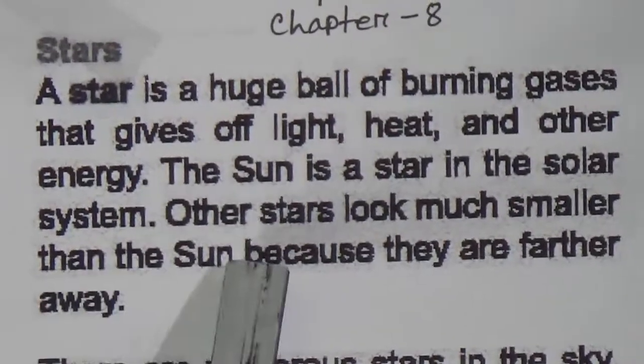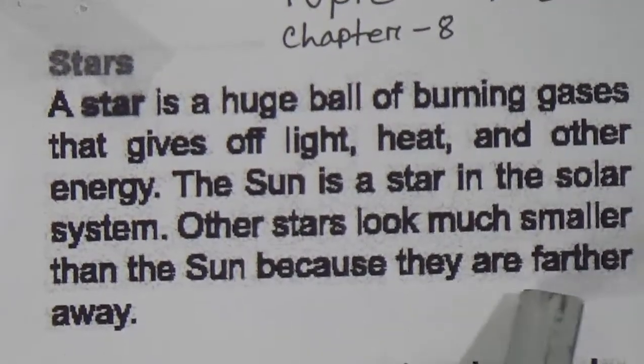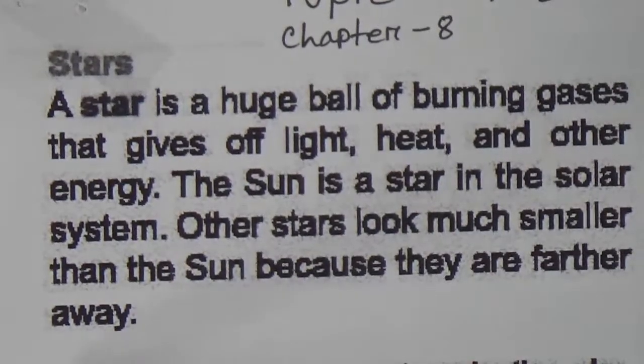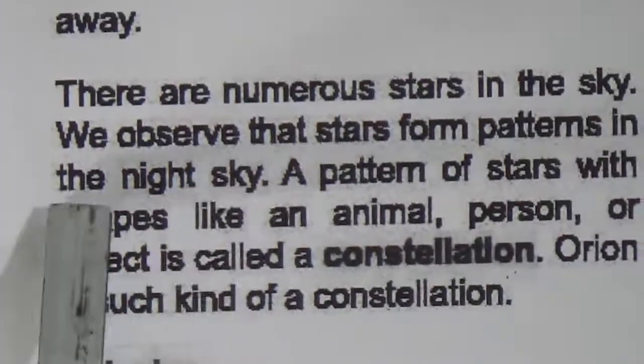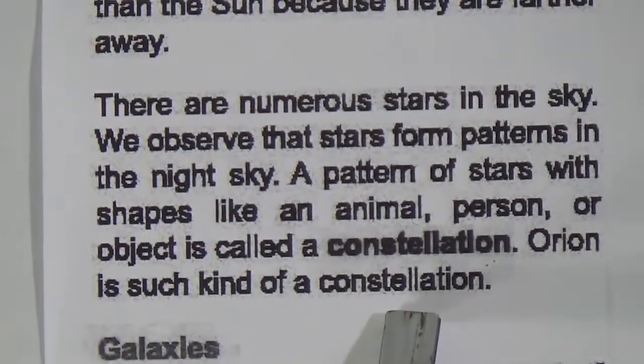Stars look much smaller than the sun because they are further away. There are numerous stars in the sky. We observe that stars form patterns in the night sky. A pattern of stars with shapes like an animal, a woman, a tree, a human, or a bird in the sky is called a constellation. Orion is such a kind of constellation.